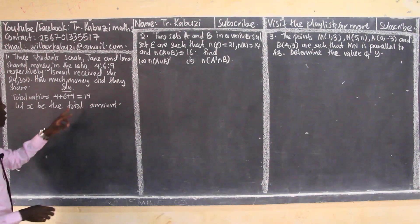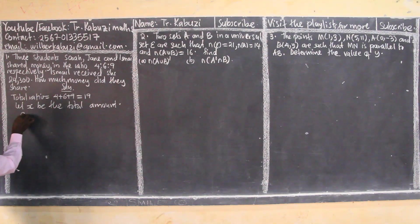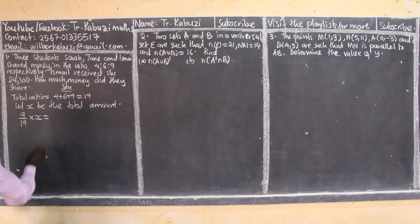So it means that if I get Isma's ratio which is nine, I will say nine over the total ratio times the total, I will get what Isma received.